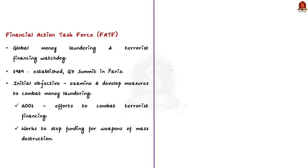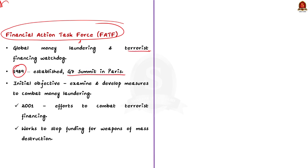What is FATF? The Financial Action Task Force or FATF is the global money laundering and terror financing watchdog. It was established in 1989 during the G7 summit in Paris. Currently, FATF has 39 member countries which are the major financial powers of the world. India became a member in 2010. The initial objective of FATF was to examine and develop measures to combat money laundering. But after the 9/11 attacks on the USA, FATF expanded its mandate to include efforts to stop terror financing. FATF also works to stop funding for weapons of mass destruction.